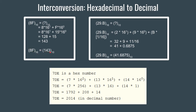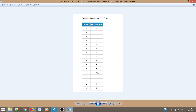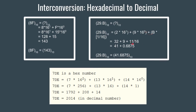Now let's verify with 29.B, the result from the previous conversion. The positional weight of 9 is 0, of 2 is 1, and B is after the decimal point. So we write: 2 × 16¹ + 9 × 16⁰ + B × 16⁻¹. B in hexadecimal equals 11 in decimal, so we compute: 32 + 9 + 11/16, which gives 41 + 0.6875 = 41.6875.